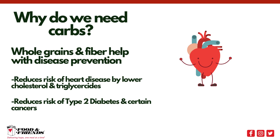Carbohydrates also play a role in disease prevention. Diets high in fiber can help reduce the risk of developing heart disease. Soluble fiber in particular helps by lowering the levels of cholesterol and triglycerides in the bloodstream — cholesterol and triglycerides attach to soluble fiber in the digestive tract, which prevents them from being absorbed into the bloodstream. Since fiber is not digested, it moves through the digestive tract and is eliminated as a waste product. In addition to preventing heart disease, whole grains and fiber can help prevent or manage type 2 diabetes and certain cancers like colon and rectal cancers.